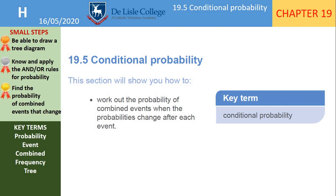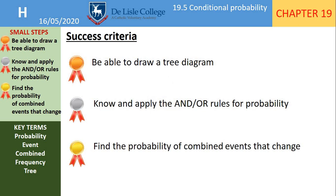We're going to move on and look at conditional probability. This is the probability of combined events when the probabilities change after each event. Our success criteria: we are going to look at drawing a tree diagram for conditional probabilities, and know and apply the and and or rules to these tree diagrams to find the probability of combined events that change.